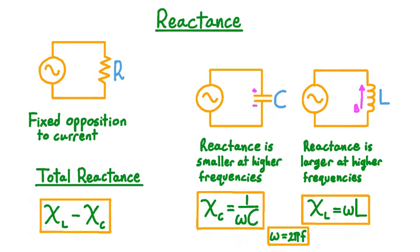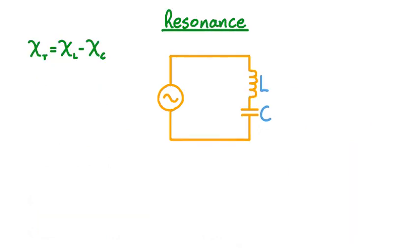Resonance will be possible in an alternating current circuit precisely because total reactance is a difference instead of a sum. Let's consider a simple circuit driven by an alternating voltage source with an inductor and capacitor connected in series. Although we'll limit our discussion to series circuits, the same principles still apply to parallel circuits. The total reactance in this circuit is the inductive reactance minus the capacitive reactance.